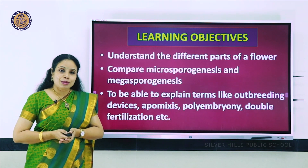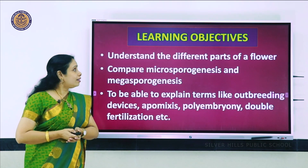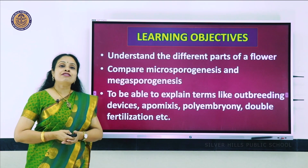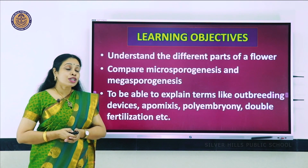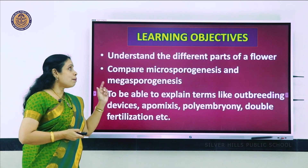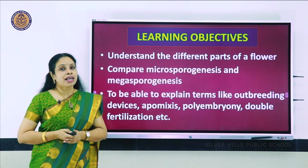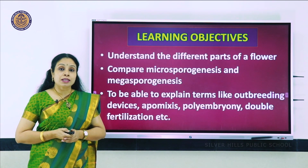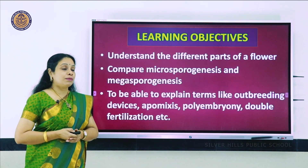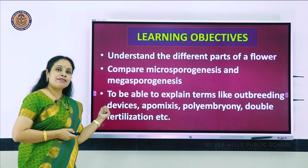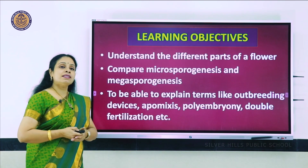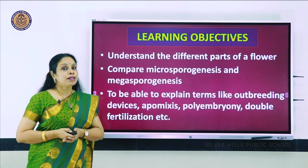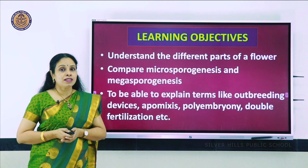Today's learning objectives are to understand the different parts of a flower, to compare microsporogenesis and megasporogenesis, and to explain new terms like outbreeding devices, apomixis, polyembryony, double fertilization, etc.